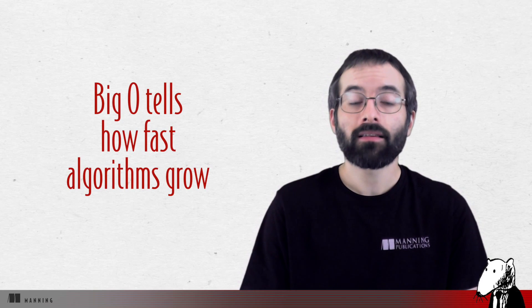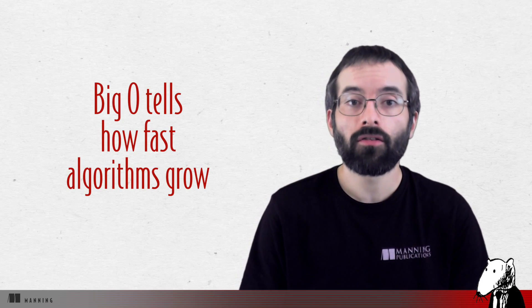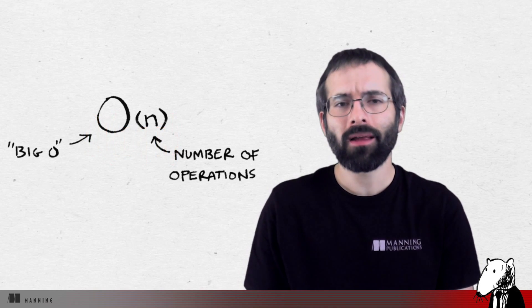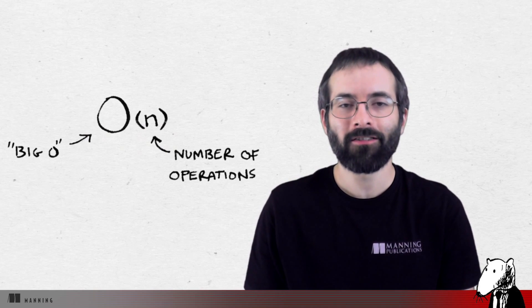Well, big O doesn't actually tell you the speed in seconds. Big O notation lets you compare the number of operations. It tells you how fast the algorithm grows. Let's do another example. Binary search needs log of n operations to check a list of size n. So what's the running time in big O notation? It's O of log n. So this tells you the number of operations an algorithm will make. It's called big O notation simply because you put a big O in front of the number of operations.